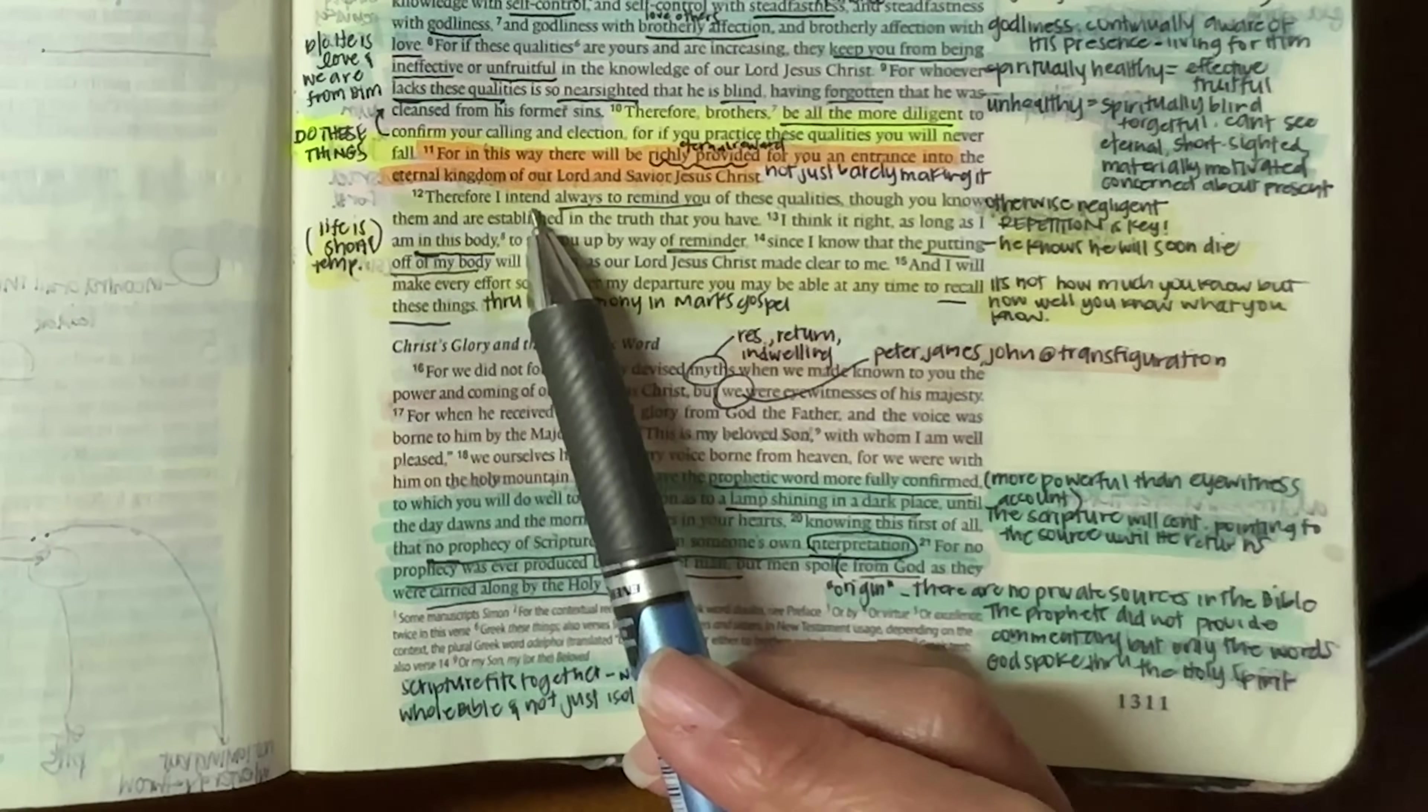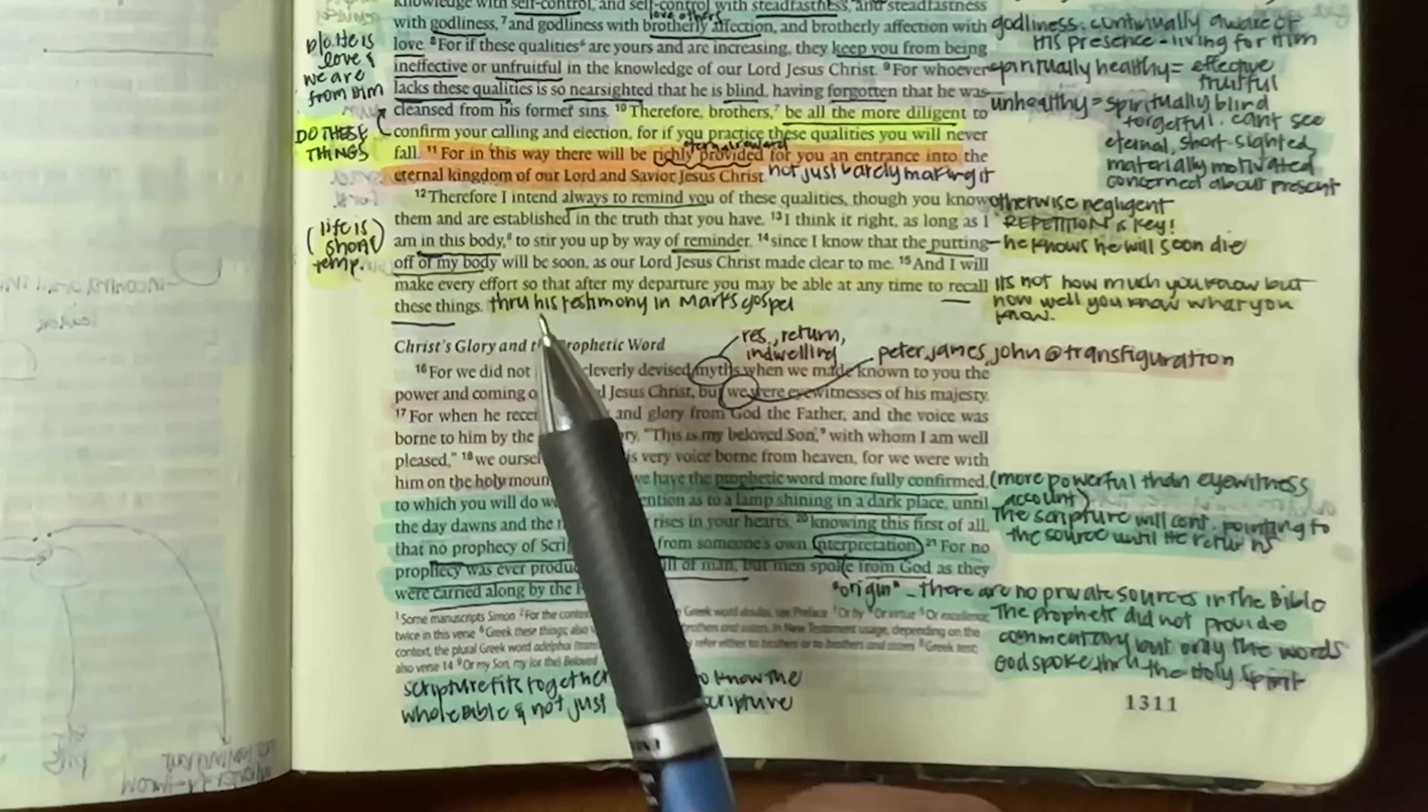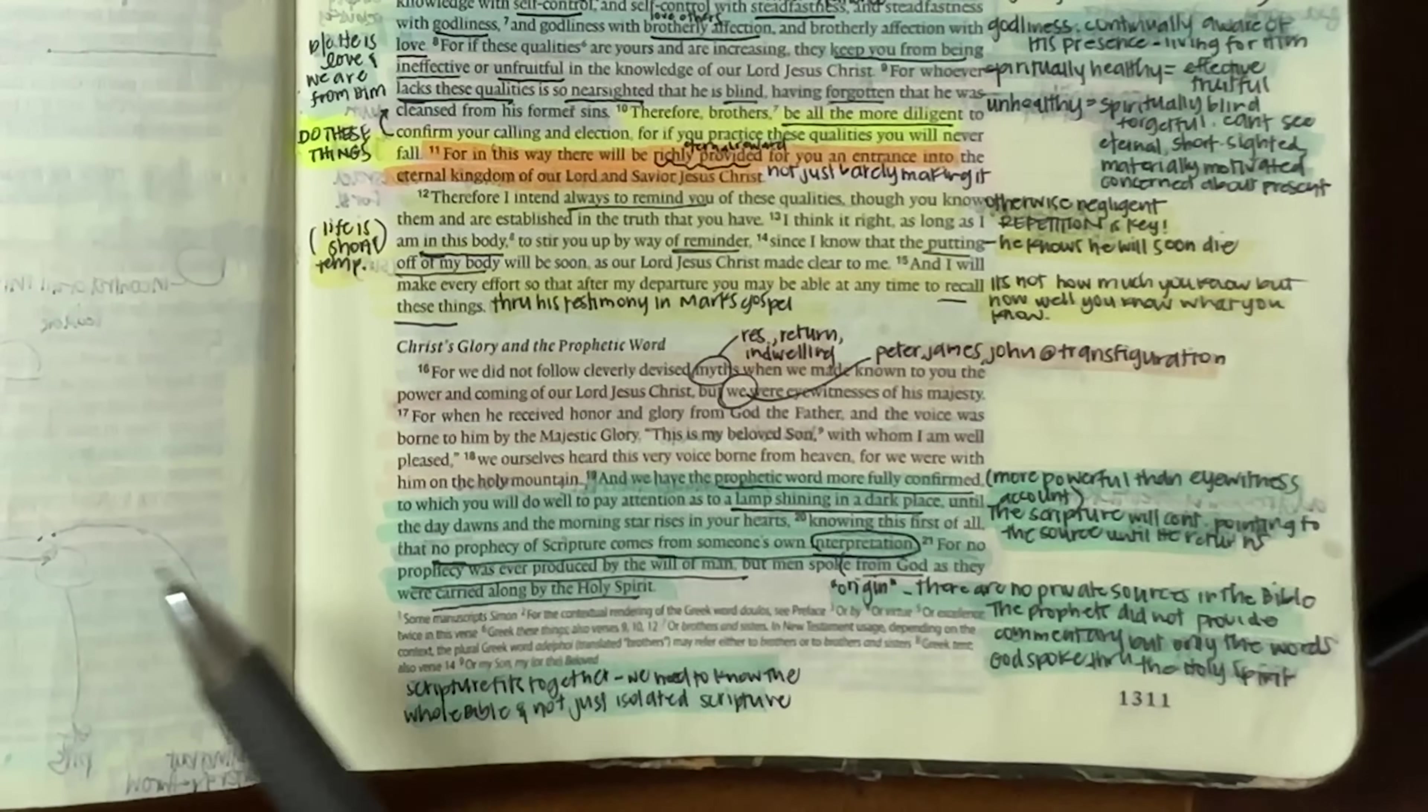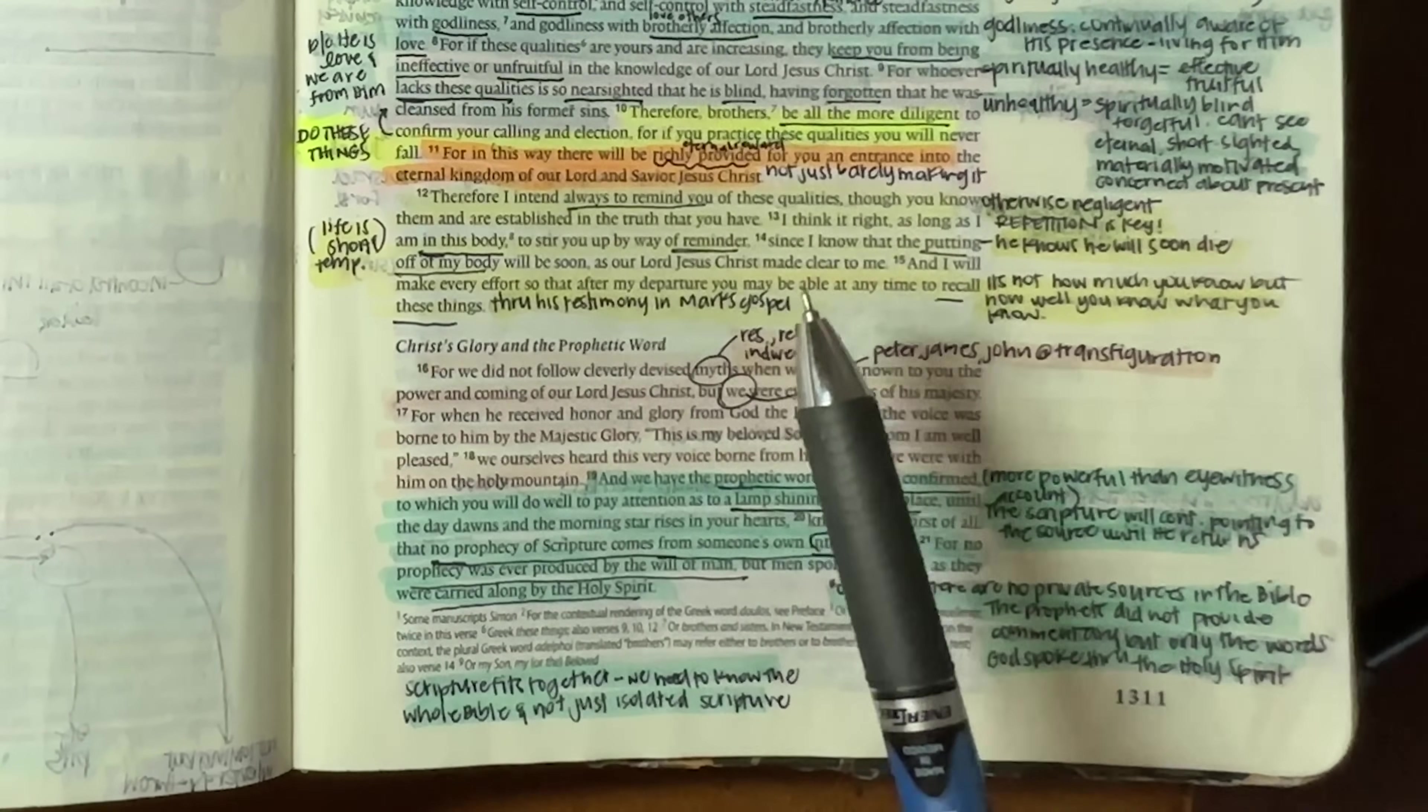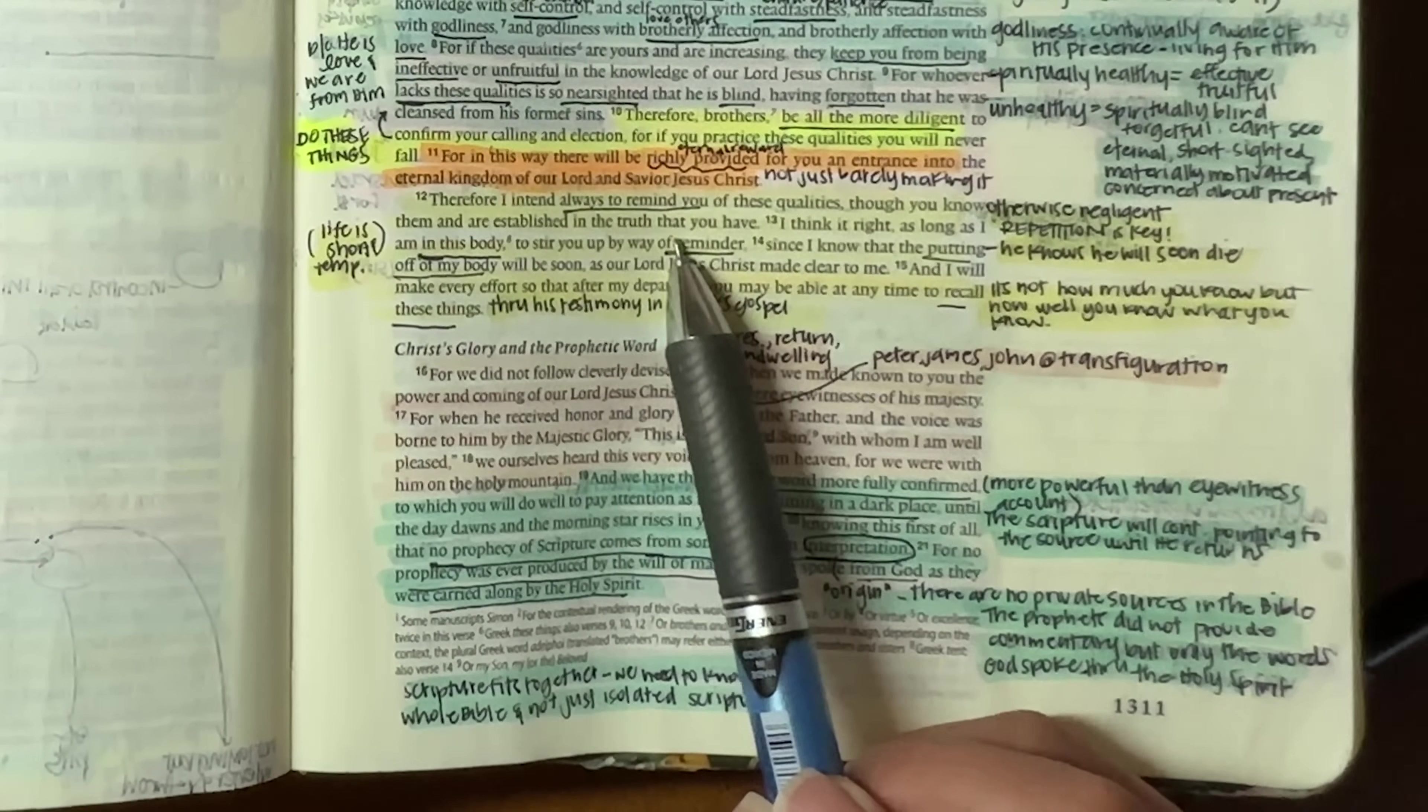Therefore, I intend always to remind you of these qualities, though you know them and are established in the truth that you have. So there is a purpose in the constant reminding. That's why we read the Bible over and over again. That's why we continue to repeat things over and over again, because it is important. Otherwise, we become negligent. So repetition is key.